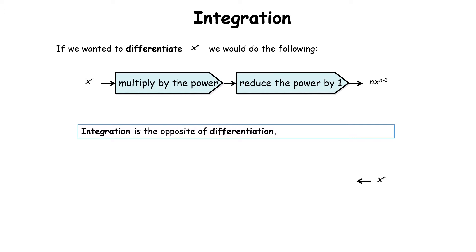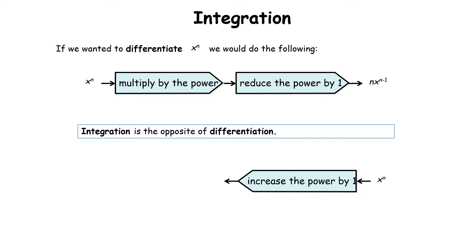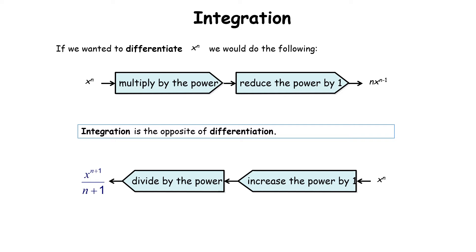Integration is the opposite of differentiation — we're going backwards. Instead of taking 1 away from the power, we add 1 to the power. And instead of bringing down the power and multiplying, we divide by the power. So x to the power of n becomes x to the power of n plus 1, divided by n plus 1.